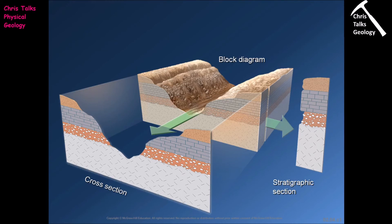Stratigraphic sections are quite helpful because they tell us the order in which layers of rock occur and show us the thicknesses. If we include clast size information, we can also use them to show changes in clast size between different layers. However, the stratigraphic section doesn't take into account topography or the dip of the rock layers — it is simply a tool through which we put the layers of rock in the correct order.